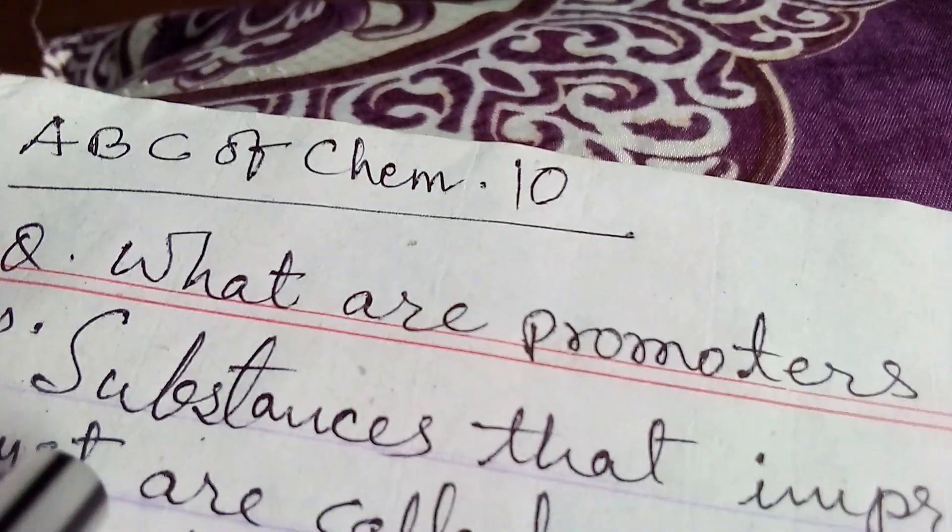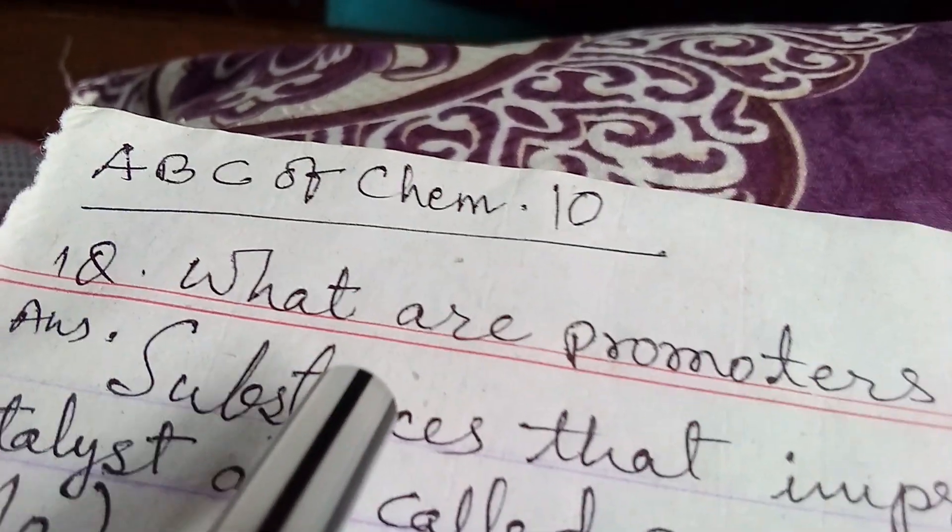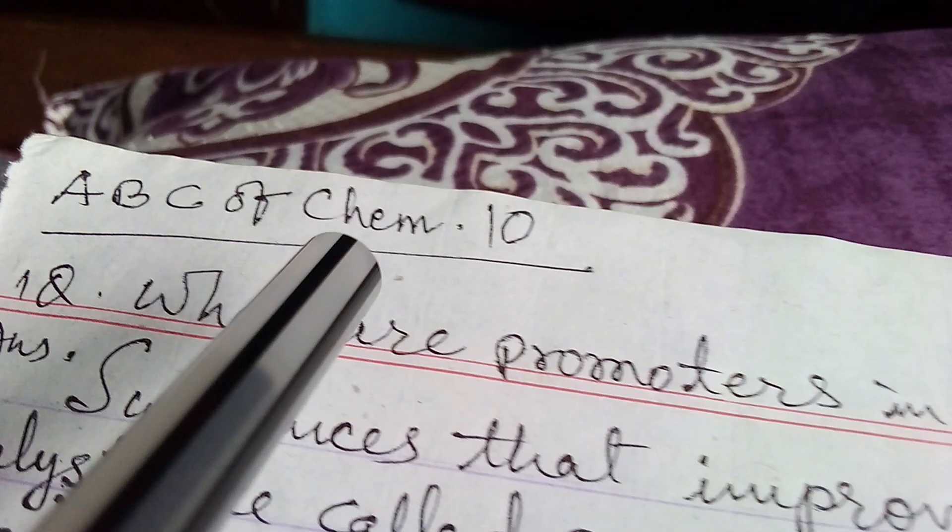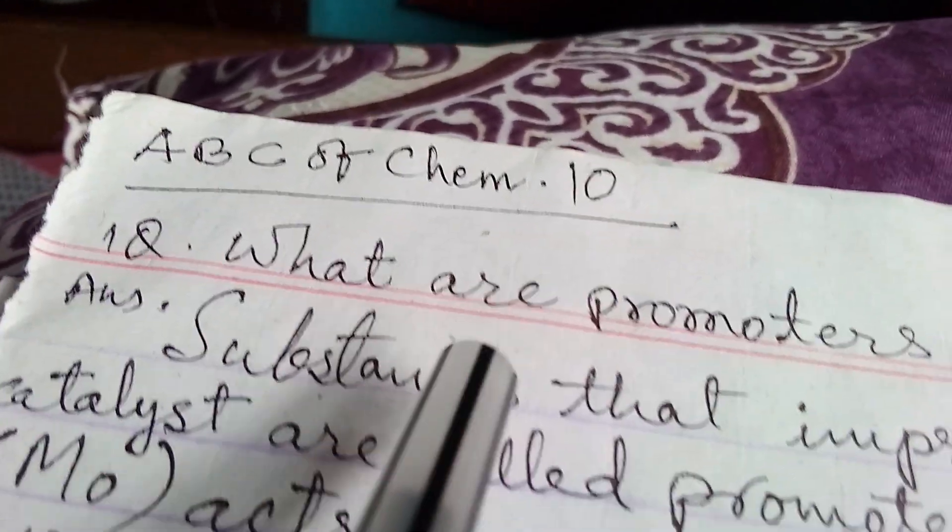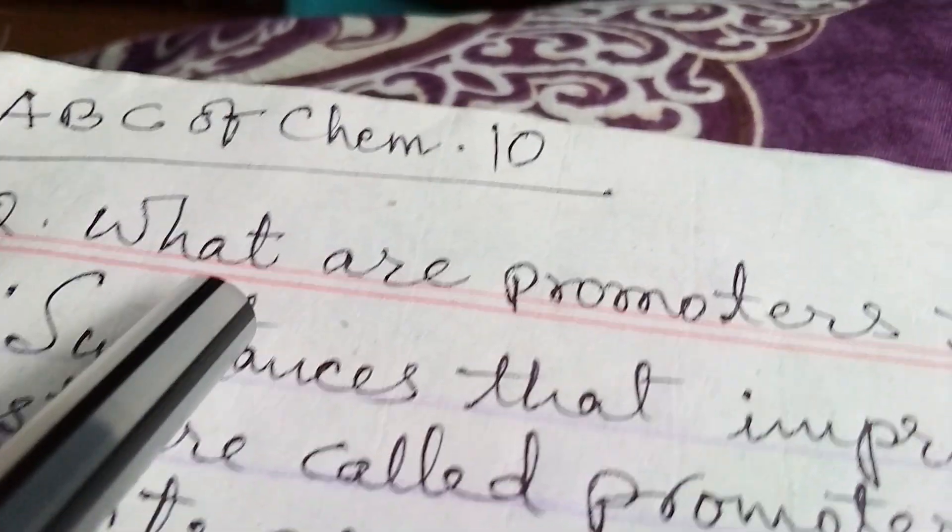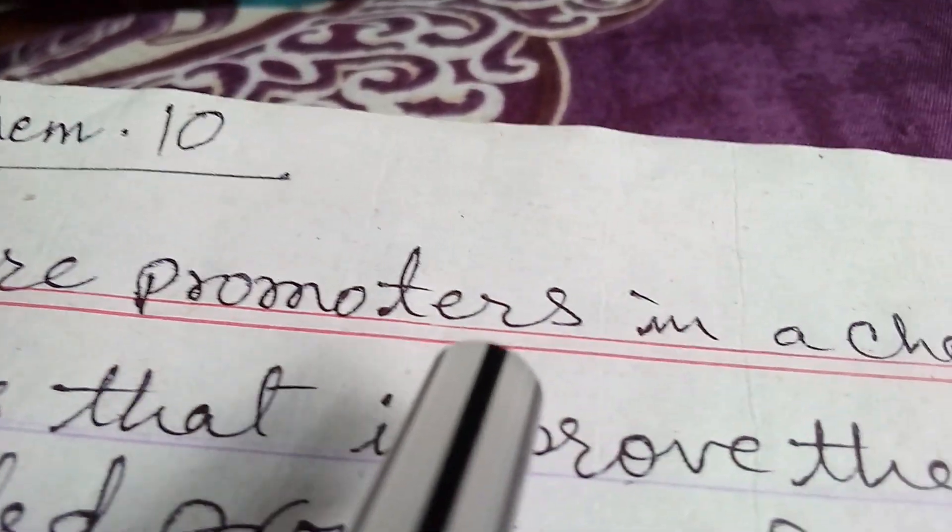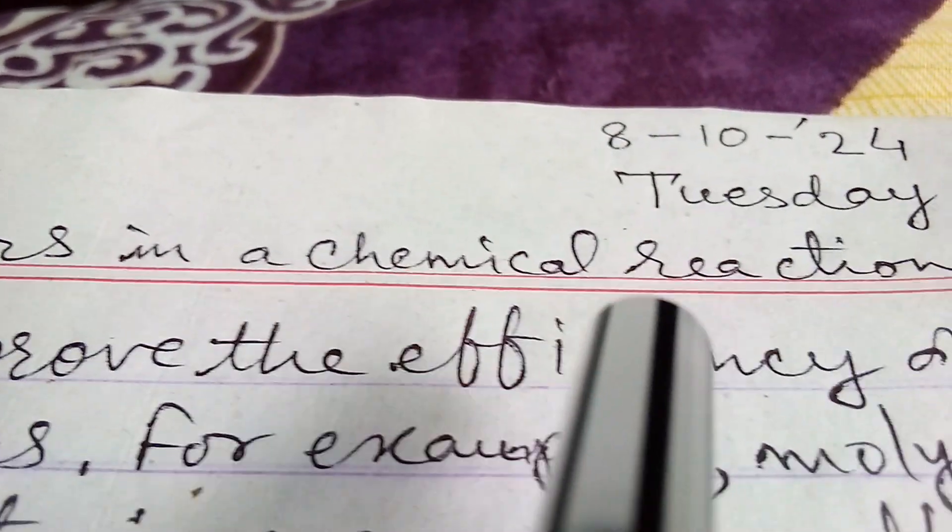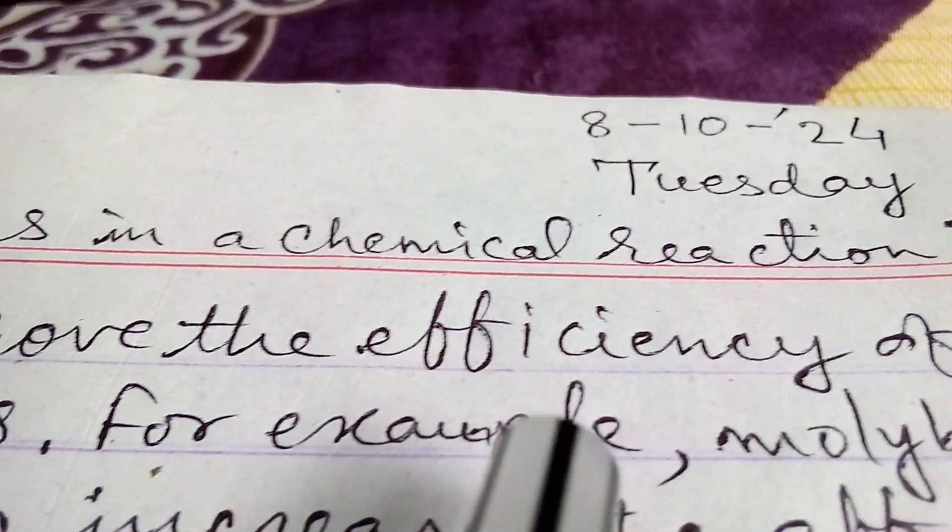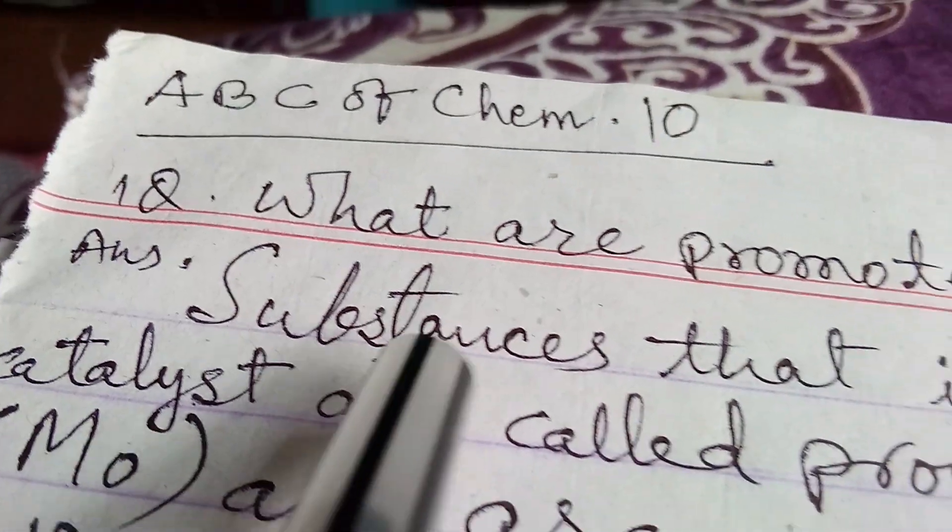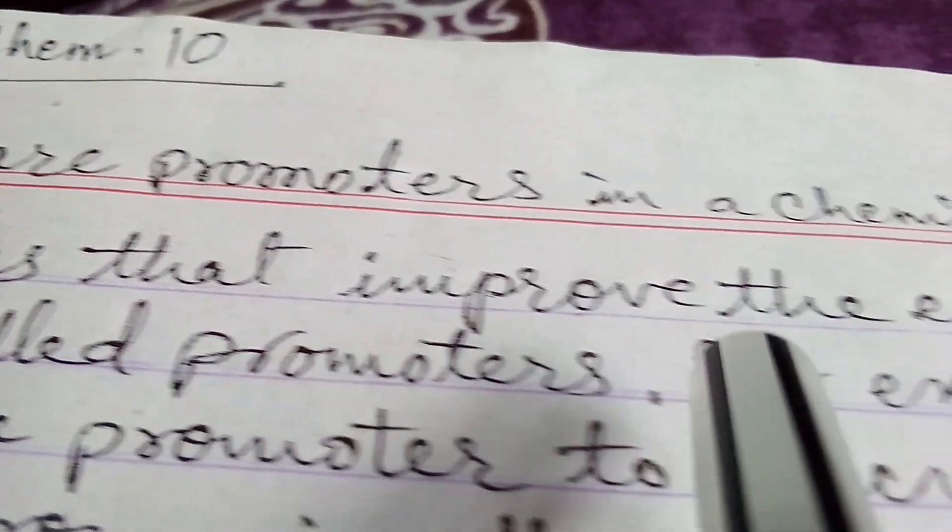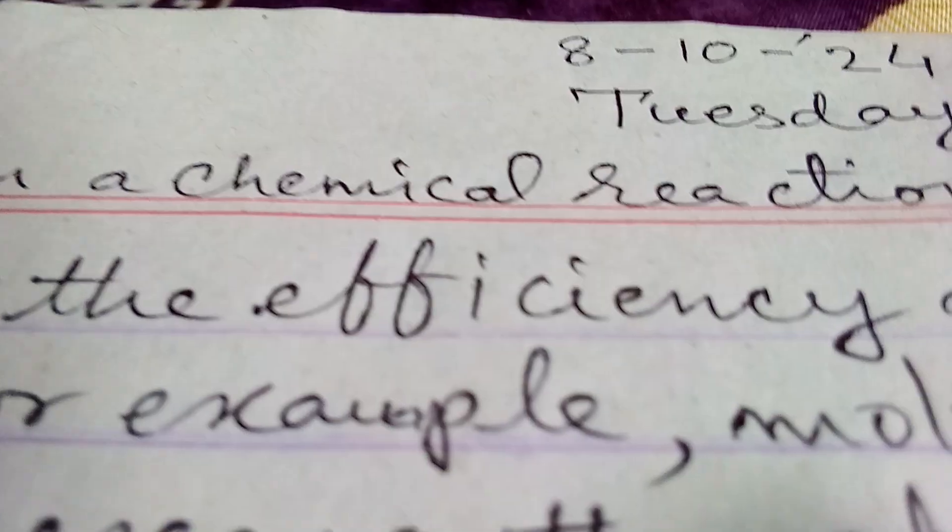My students, today I am going to discuss some questions in chemistry and it is the next part of chemistry ABC of chemistry. First question is: what are promoters in a chemical reaction? Answer is: substances that improve the efficiency